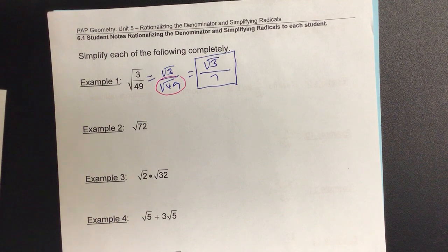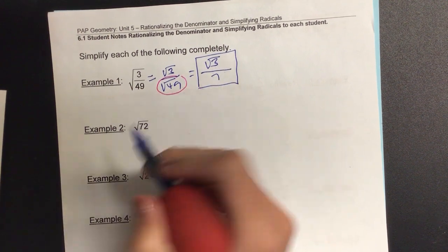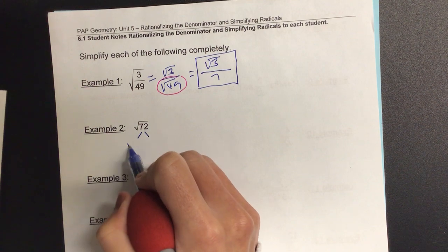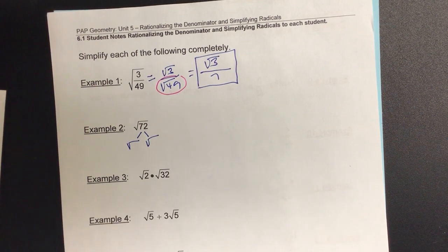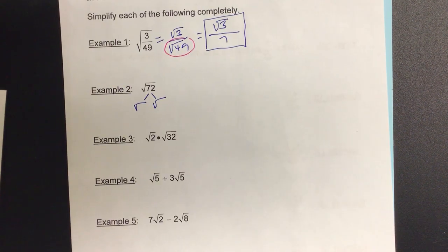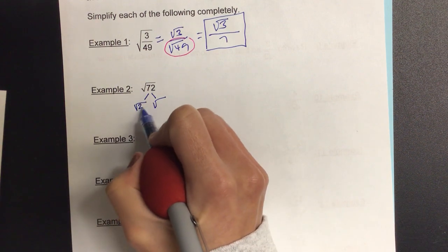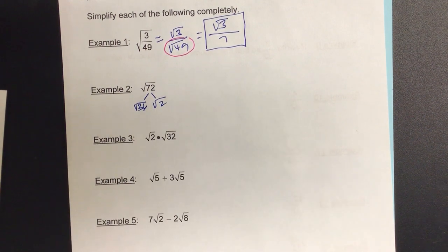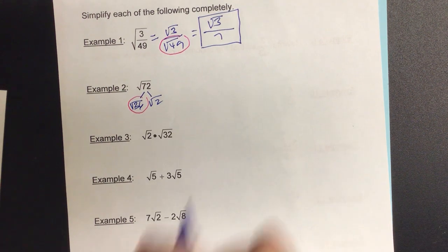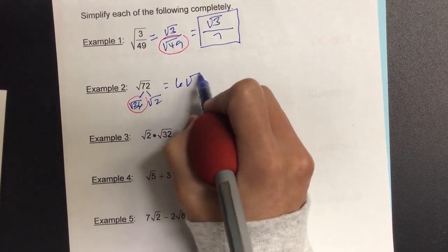So then let's try number two. Number two, we don't have a fraction but we do want to split it. And I want to split it with a perfect square. What two numbers can I think about? 36 and 2. And when I look at 36, that is a perfect square of 6, so we have 6 radical 2.